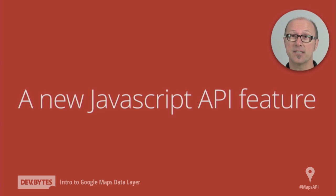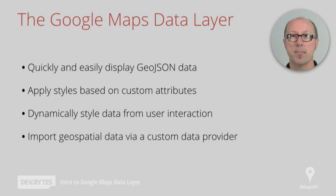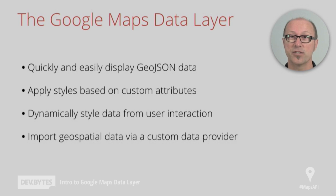The data layer lets you display arbitrary geospatial data. It's a container for any kind of geospatial data you can get in JSON format. What's really cool about this is that you can make amazingly amazing data visualizations. It really makes it simple to import GeoJSON data to display on your map. You can also style that GeoJSON data using custom attributes, giving you a declarative way of displaying a different visual experience for your user, which is really nice.